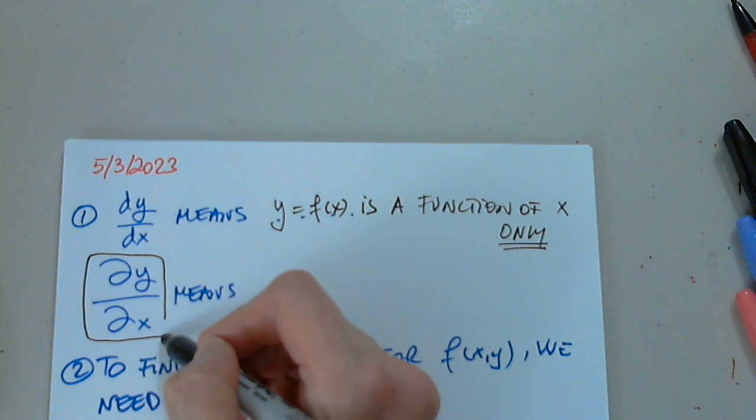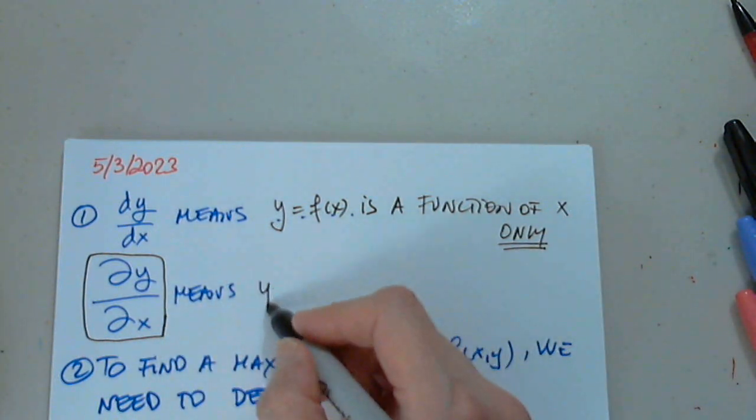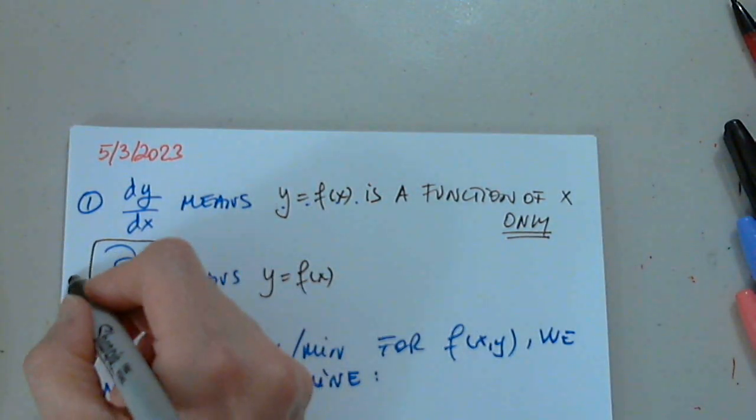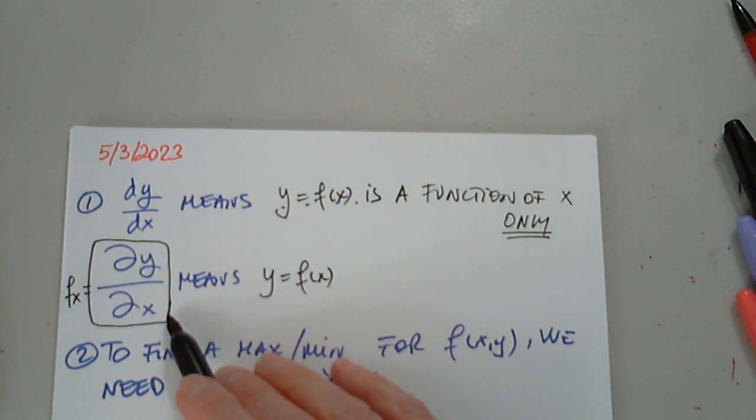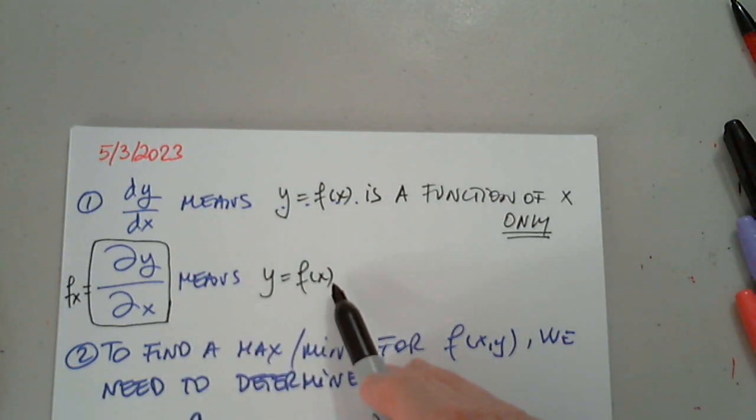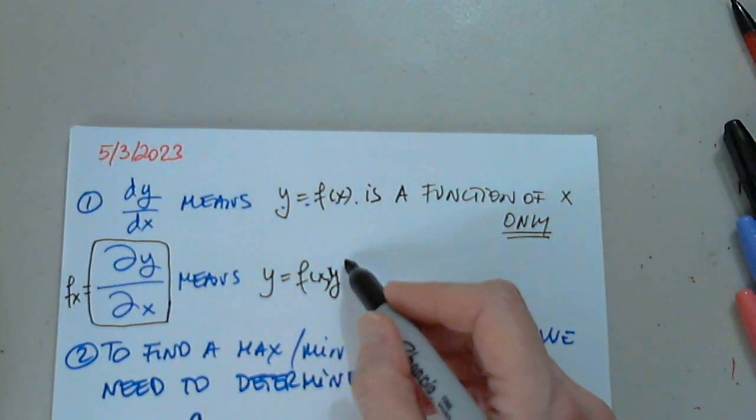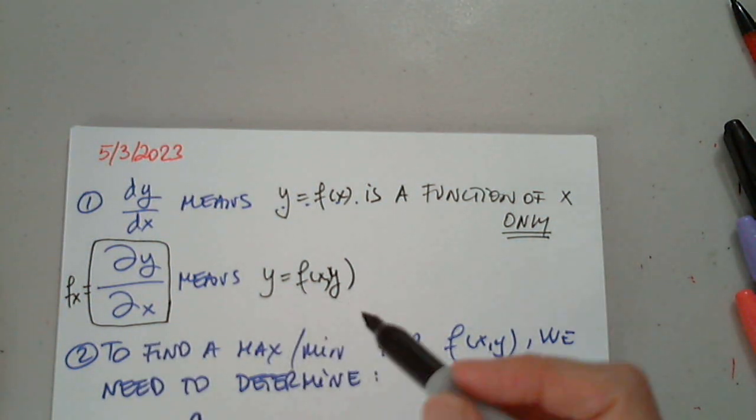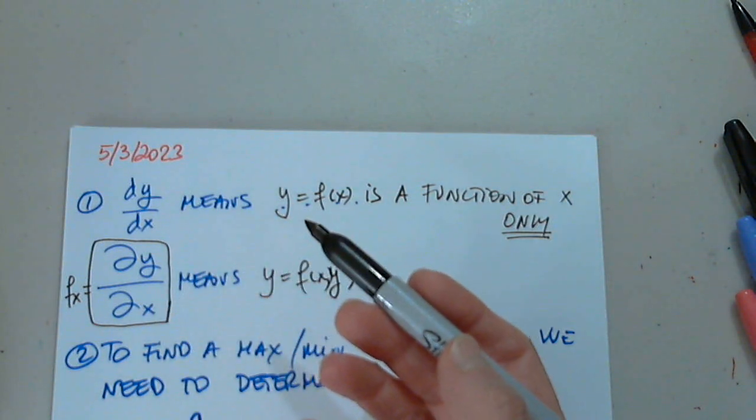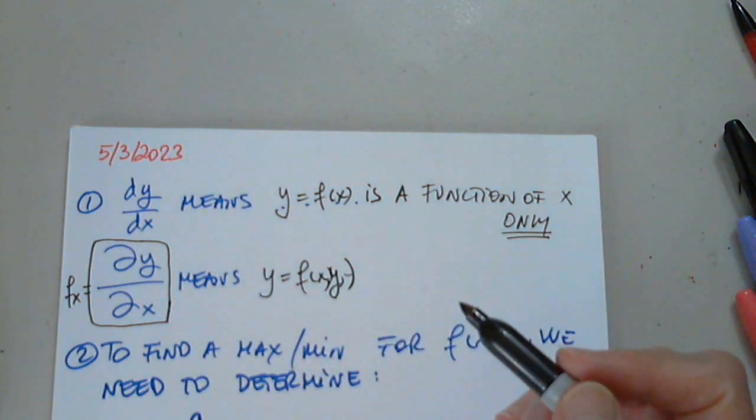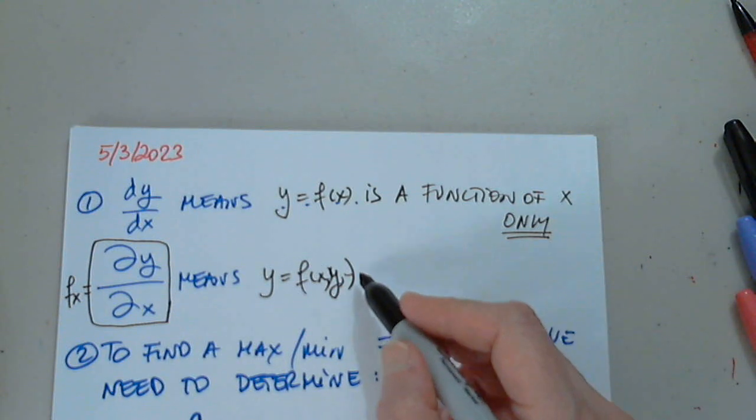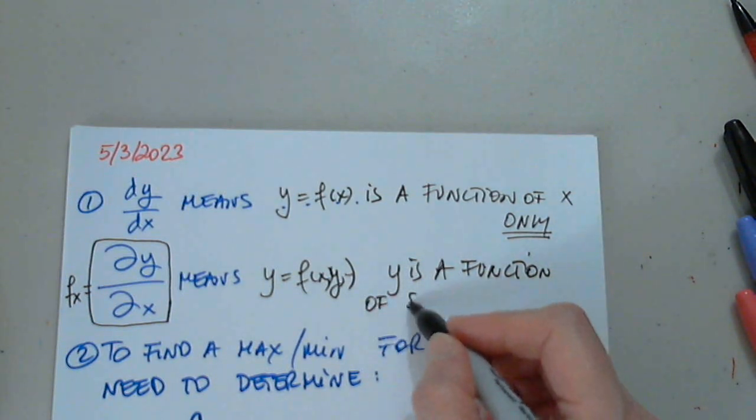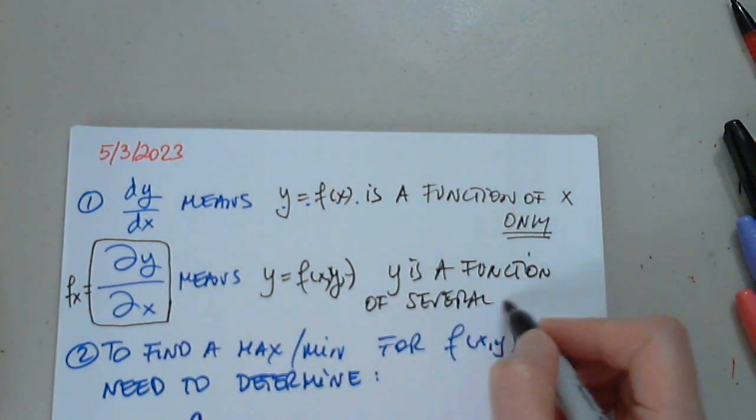When we see something like this, partial derivative of y with respect to x, fx fx fx. Yes. So this can be denoted by fx. Good. What does it mean? Partial? Yes. So then we have at least two variables, if not more. So maybe I shouldn't write this because I don't know how many variables, or I could put just dot dot dot.